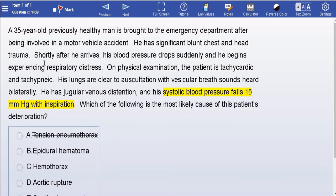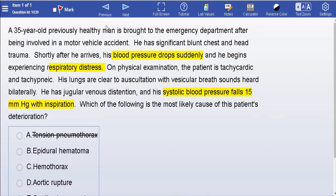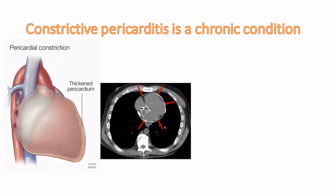That's the secret about reading the last two sentences. The full scenario: a 35-year-old previously healthy man is brought to the ER after a motor vehicle accident. He has significant blunt chest and head trauma. Shortly after arriving, his blood pressure drops suddenly — shock — and he begins experiencing respiratory distress. Had I read the whole thing without reading the last two sentences first, I would have been prepared to choose tension pneumothorax because it looks a lot like it — and that's what's confusing.